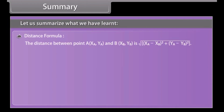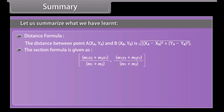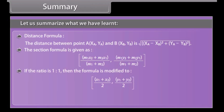Summary: Let us summarize what we have learned. The distance formula: the distance between point A(Xa, Ya) and B(Xb, Yb) is the square root of (Xa minus Xb) whole square plus (Ya minus Yb) whole square. The section formula is given as ((M1·X2 plus M2·X1) divided by (M1 plus M2), (M1·Y2 plus M2·Y1) divided by (M1 plus M2)). If the ratio is 1 to 1, the formula simplifies to ((X1 plus X2) divided by 2, (Y1 plus Y2) divided by 2). Area of triangle equals one-half times [X1(Y2 minus Y3) plus X2(Y3 minus Y1) plus X3(Y1 minus Y2)].